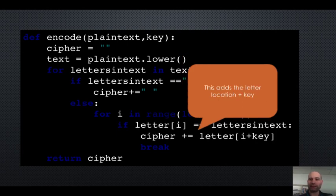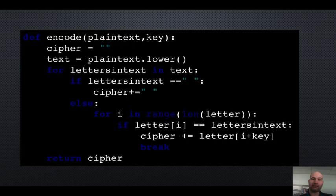This adds the letter location plus the key. Notice how I've tried to keep everything in numbers. So it literally goes to the position plus three, or plus four, or plus five, etc. And that is how we encode a Caesar cipher.